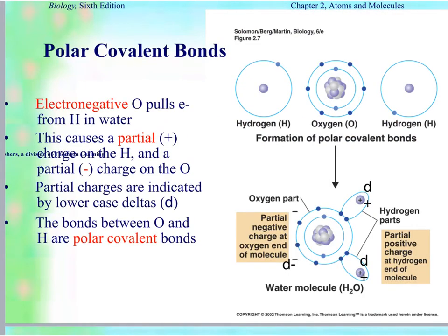There are two types of covalent bonds: nonpolar covalent bonds and polar covalent bonds. Polar covalent bonds result when atoms are not sharing electrons equally, while nonpolar covalent bonds share electrons equally. Water is an example of a polar covalent bond — it does not share electrons equally because oxygen is electronegative and really wants those electrons more. Hydrogen is so weak it can't hold on, so oxygen pulls the electrons more toward its nucleus, giving oxygen more of a negative charge and the hydrogens a slight positive charge. This creates polarity, which produces many of water's unique properties.